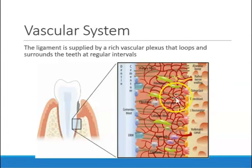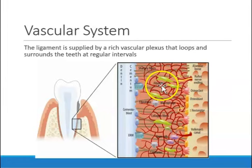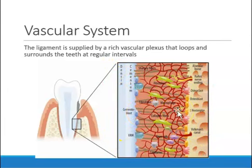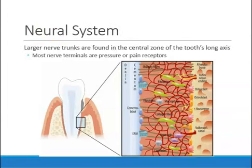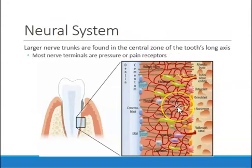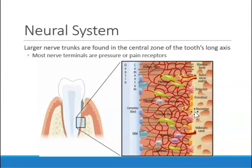Unlike osteoclasts that destroy bone and cementoclasts that destroy cementum, we don't call the fiber-destroying cells 'fibroclasts' — they are still called fibroblasts, and they both make and destroy fibers. The periodontal ligament has a very rich vascular system with blood vessels looping from cementum to bone. There are also nerve terminals within the periodontal ligament fibers, which is important for sensing pressure or pain when we bite into something hard.